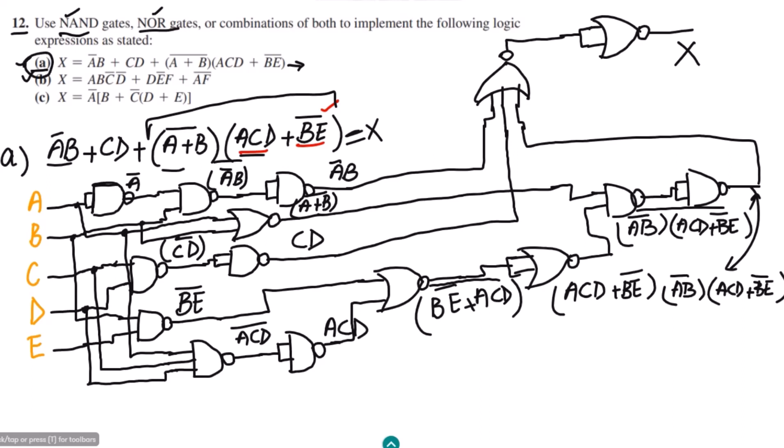This is one of the complex circuits in which we have implemented part A using NAND and NOR gates. I hope all the steps are clear and you have grasped the concepts of implementing logic expressions using NAND and NOR gates. I'll see you with more interesting questions in the upcoming video — take care and see you soon.